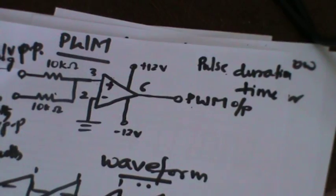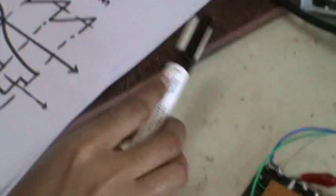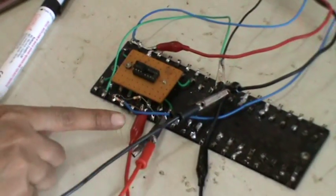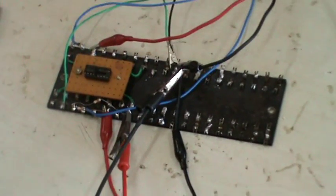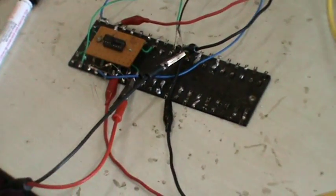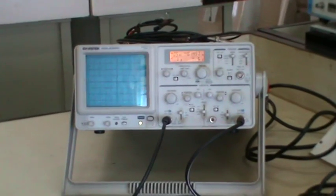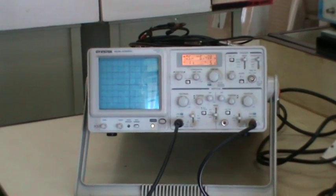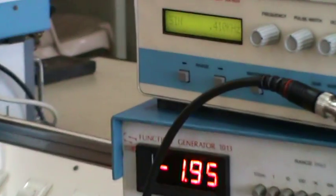When observing on the CRO, there are two signals: one is the message signal and the other is the square signal. Channel 1 is given the input. The message signal should be in the range of 500 Hz, and the sawtooth voltage should be given around 2 kilohertz. Initially set the message signal to one volt amplitude — that is one volt peak to peak — using the signal generator.